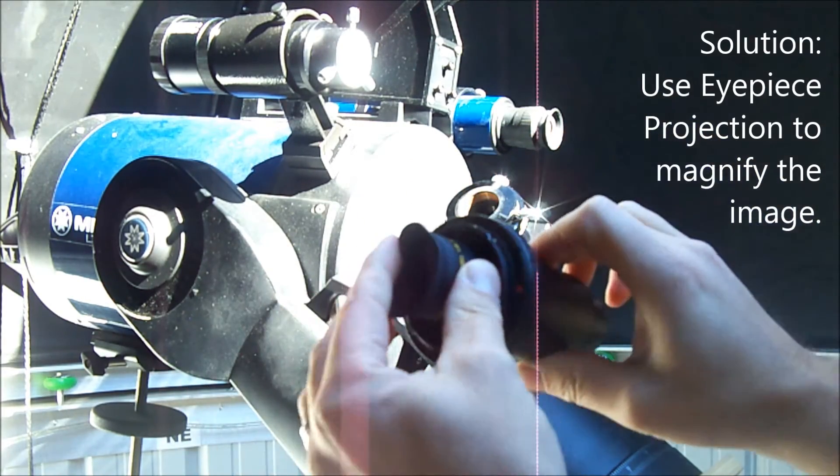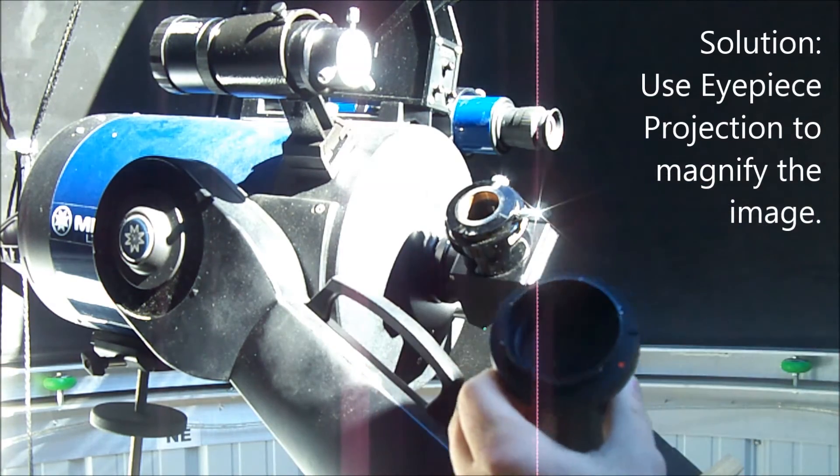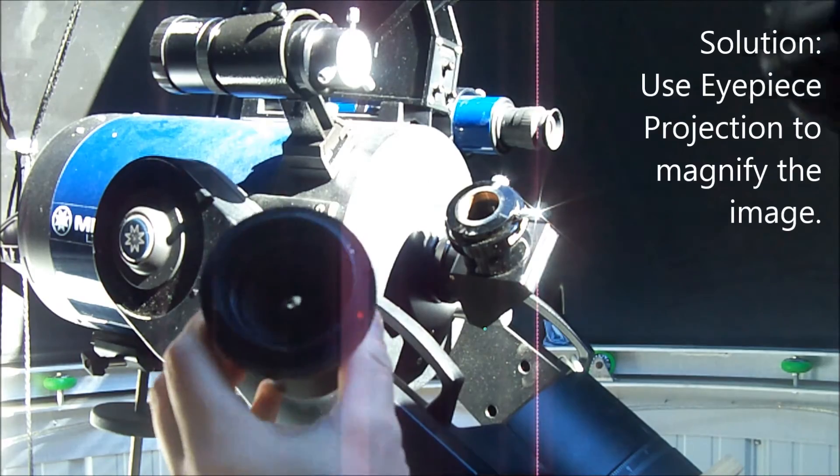You take the eyepiece that you want to magnify with, place it into the adapter, and using a T-ring, you attach the camera to the assembly.